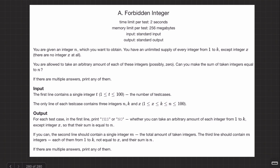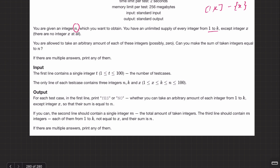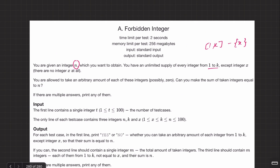Welcome back everyone. Let's solve this question: Forbidden Integer. You are given an integer n which you want to obtain. You have unlimited supply of every integer from 1 to k, except an integer x, where x is less than or equal to k. You want to make integer n using integers from 1 to k except the forbidden integer x.